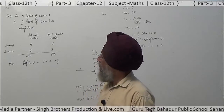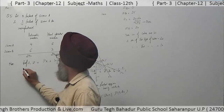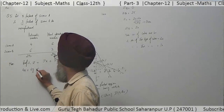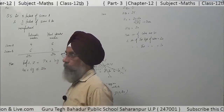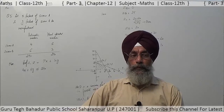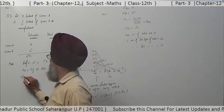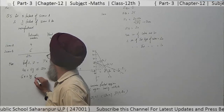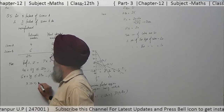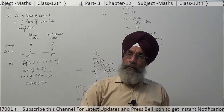Forming the equations: for the automatic machine, 4x + 6y ≤ 240, since total machine hours are at most 4 hours. For the hand-operated machine: 6x + 3y ≤ 240. Also, x ≥ 0 and y ≥ 0. Now solve it by the same procedure to find the answer.